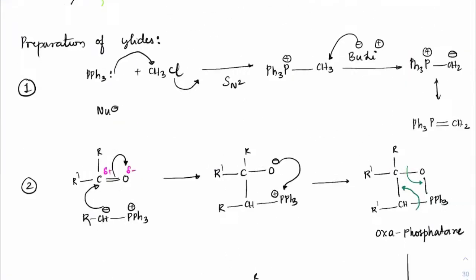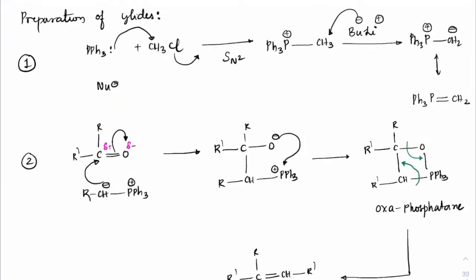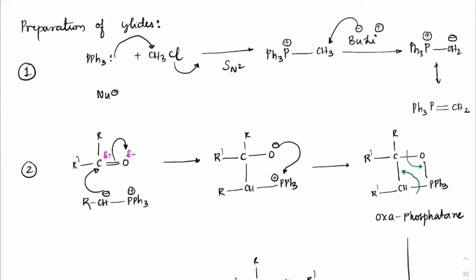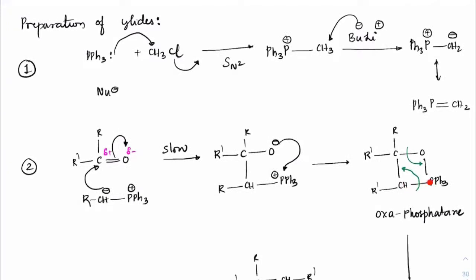That is how the alkene is formed — this overall transformation is called the Wittig reaction. The slow step is the nucleophilic addition. The C–P bond breaks to form the stronger C=C bond, and the C–O bond breaks to form the stronger P=O bond. The driving force is the higher bond strength of C=C and P=O.